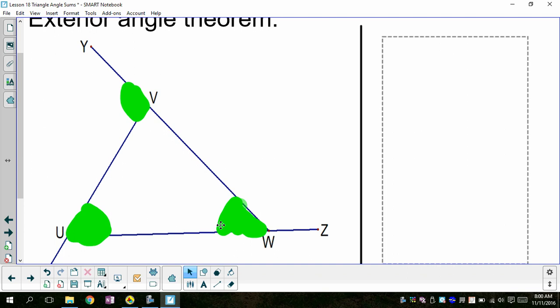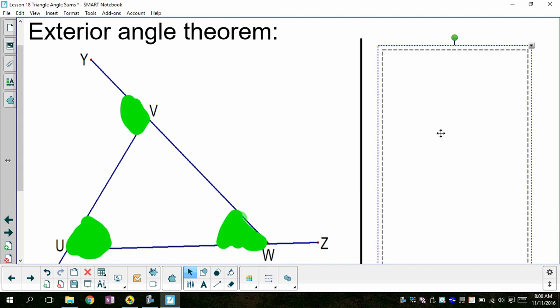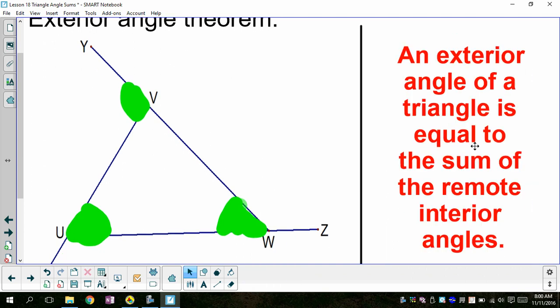So here if I added U and W, that will be equal to this exterior angle at vertex V of the triangle. So I have that in words here. These two interior angles we call remote interior angles. We call them remote interior angles because they're the ones that are furthest away from the exterior angle we're using. Sort of like a remote control is something you can use far away from the television.